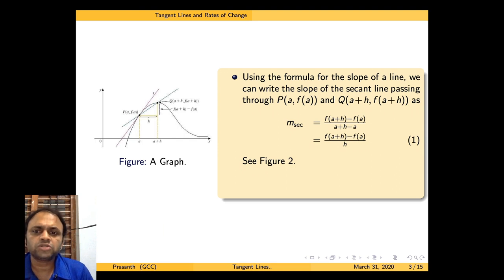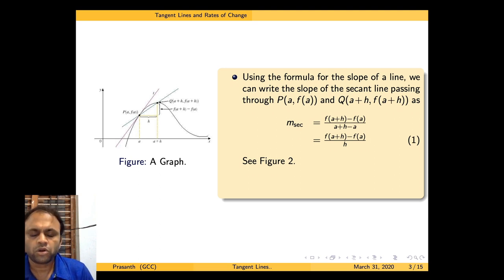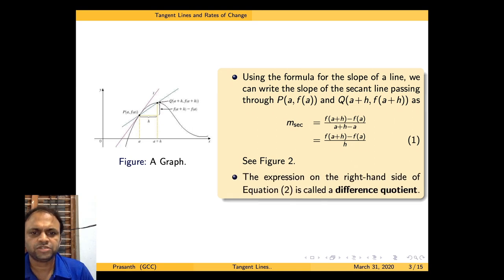Suppose you are given two points on a straight line, then you know the slope of that line. With points P(a, f(a)) and Q(a+h, f(a+h)), the slope is m_sec equal to the y-difference divided by the x-difference, that is f(a+h) minus f(a) divided by h. This expression, f(a+h) minus f(a) divided by h, is called the difference quotient.